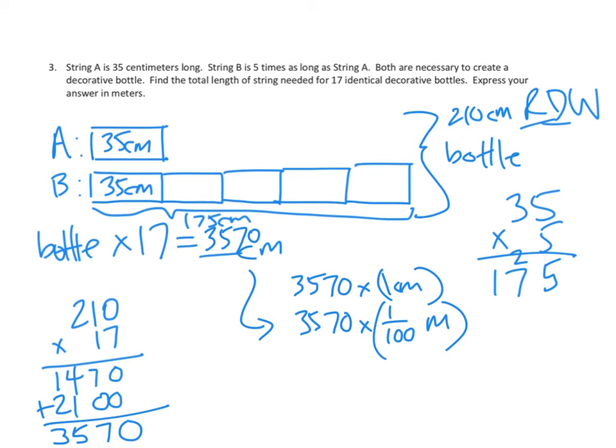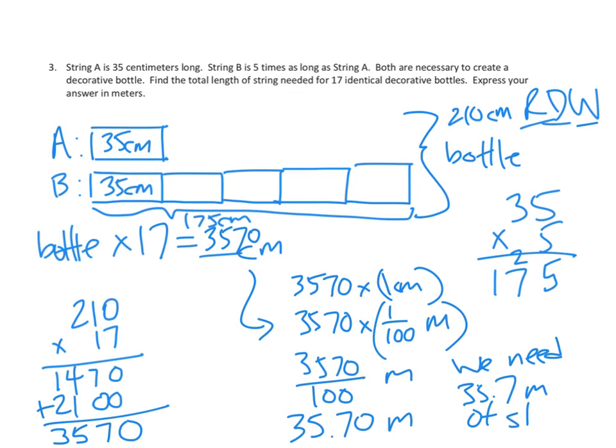And now I can do that multiplication. That's 3,570 divided by 100 meters. When I divide by 100, I move all my place values two parts to the left, and so I have 35 and 70 hundredths, or 7 tenths meters. So we need 35.7 meters of string. I wish you best of luck with problems 1, 2, or 4, depending on what your teacher assigned to you tonight. Thanks for joining me this time, and I'll see you again next time on Mr. Kung Has Problems. Take care.